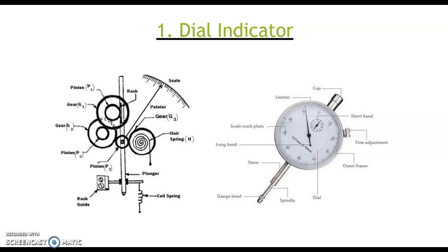The first example of a mechanical comparator is a dial indicator or dial gauge. The parts of the dial gauge shown include the spindle, the dial, outer frame, fine adjustment, short hand, limiter scale, mark plate, long hand, and stem.